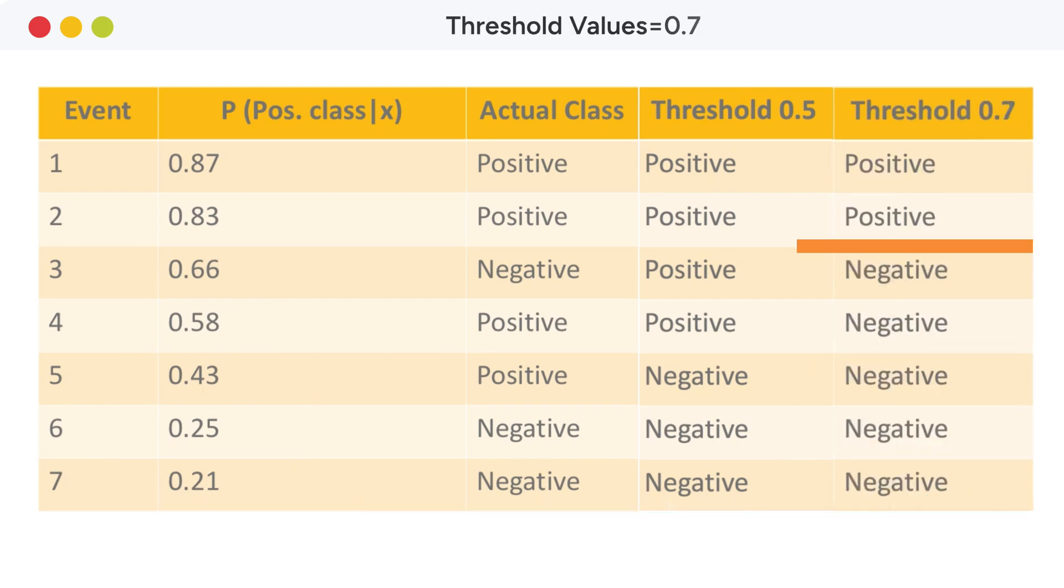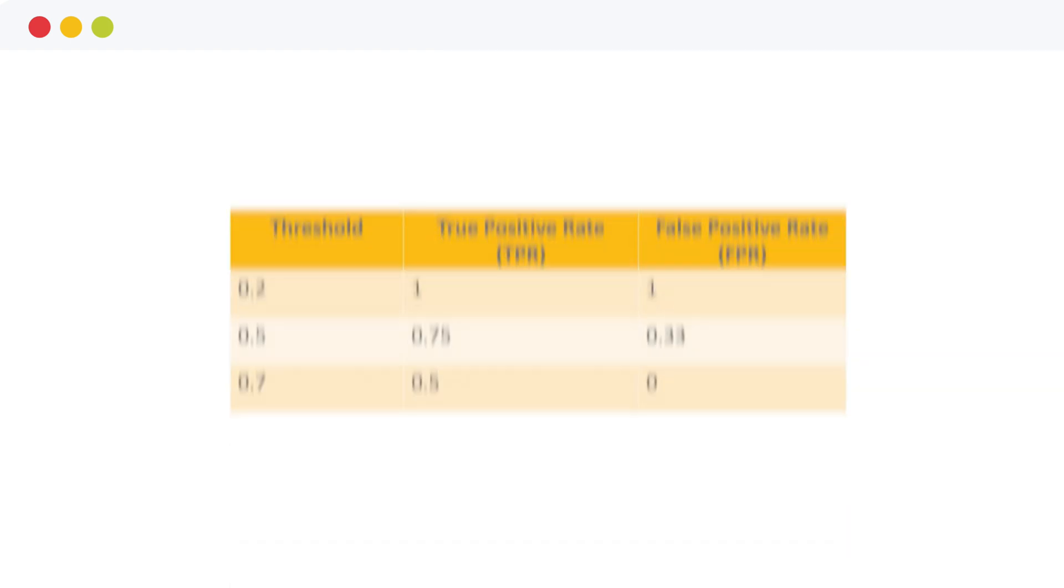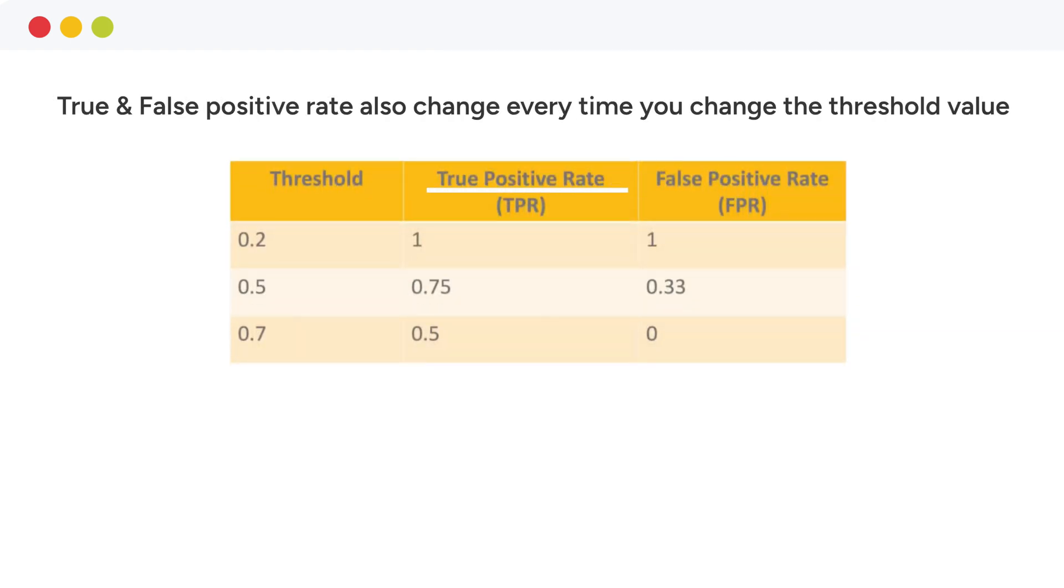Finally, let's increase the classification threshold to 0.7. Now, only those events with the probability for the positive class greater than 0.7 will be assigned to the positive class. As you can see, the true positive rate and the false positive rate also change every time you change the threshold value.